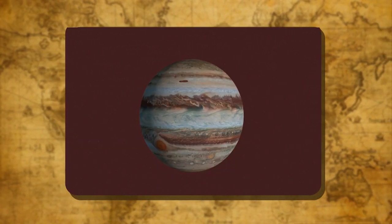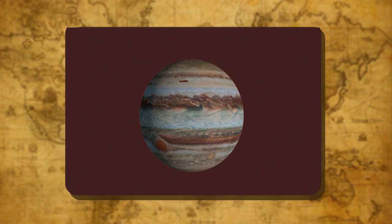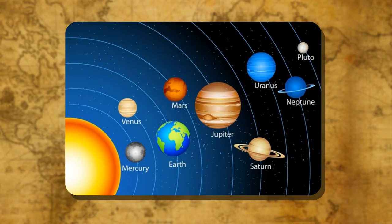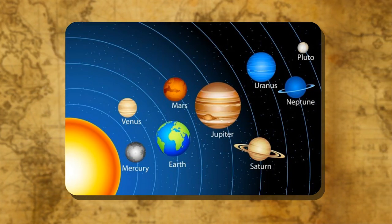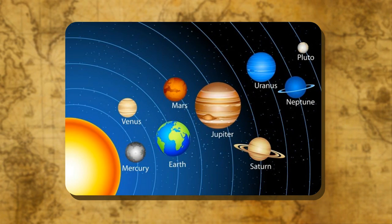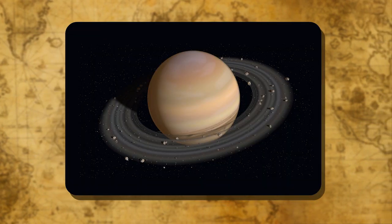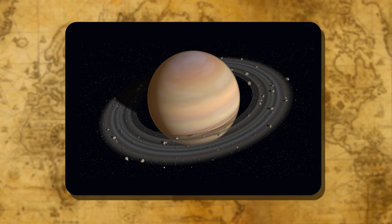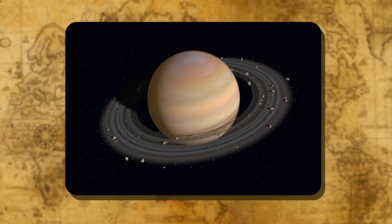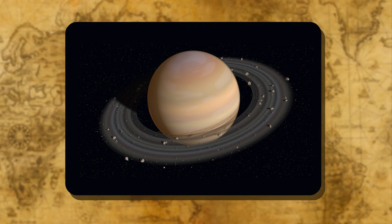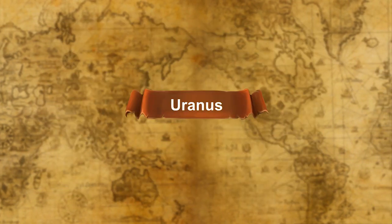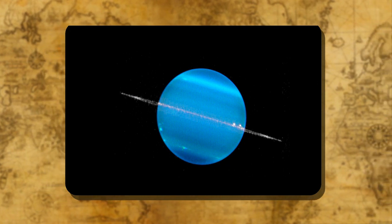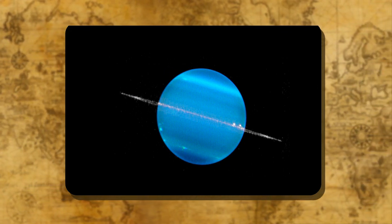Jupiter: It is the largest planet and the fastest rotating planet, taking less than 10 hours for rotation. It is so huge that it may contain 1,300 Earths in it. Saturn: It is the sixth planet from the sun and the second largest in the solar system, nine times as large as the Earth. It looks beautiful because of the rings around it. Uranus: It has five known satellites and takes 84 years to complete one revolution.